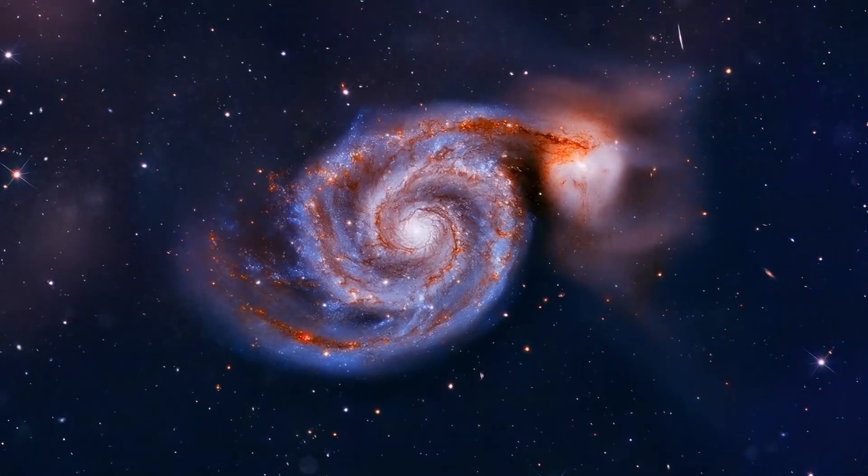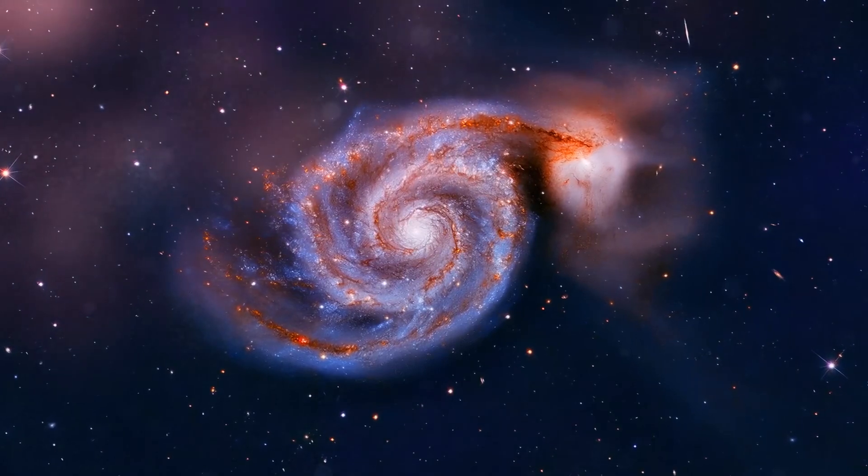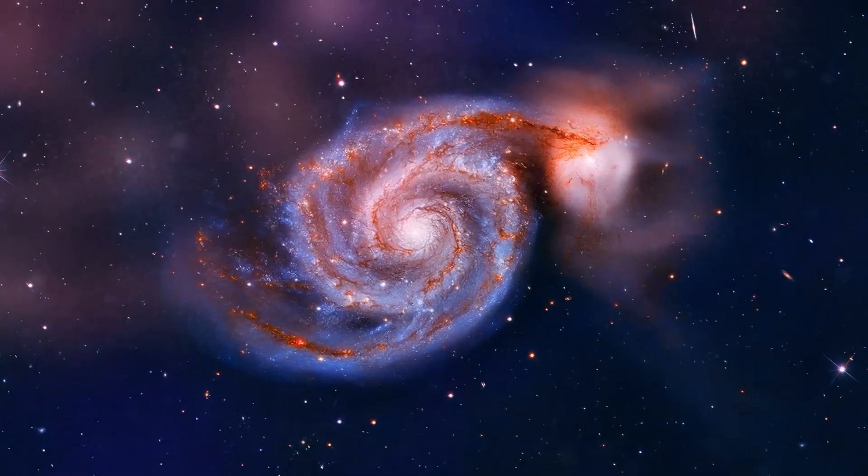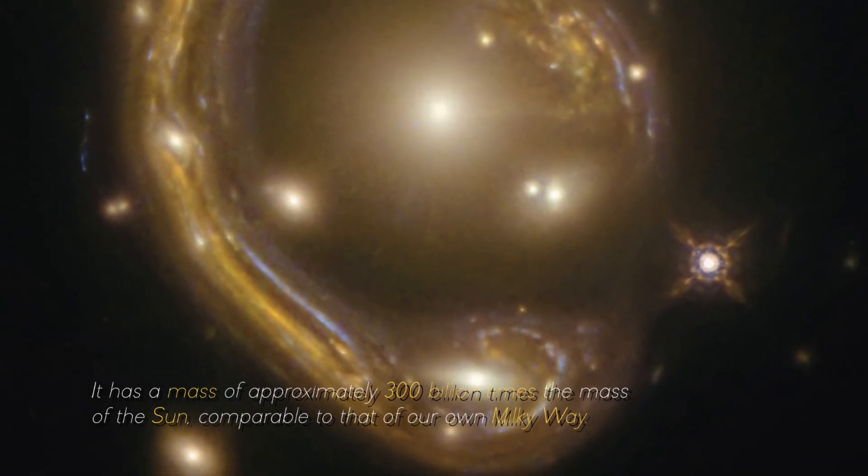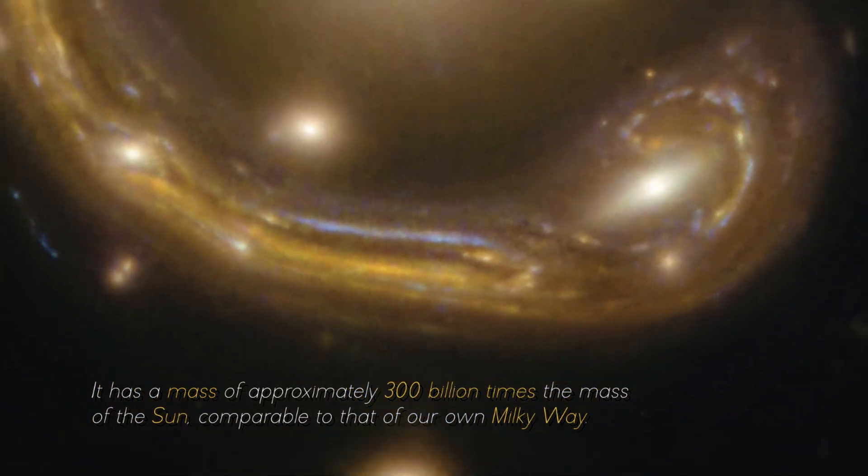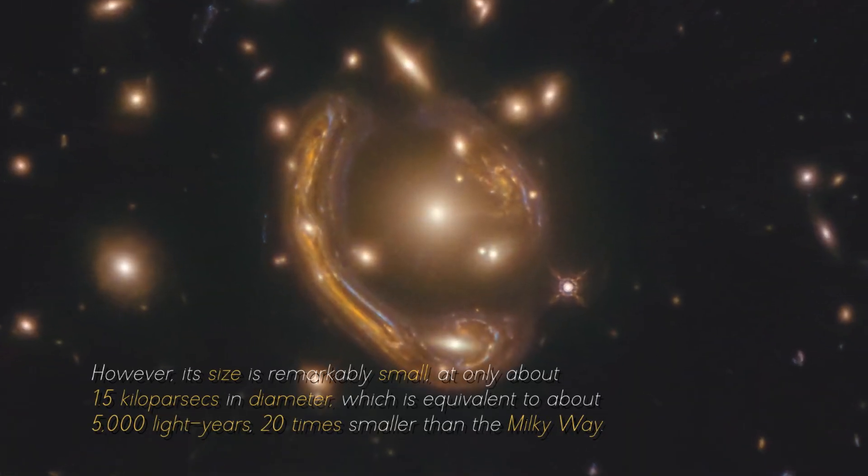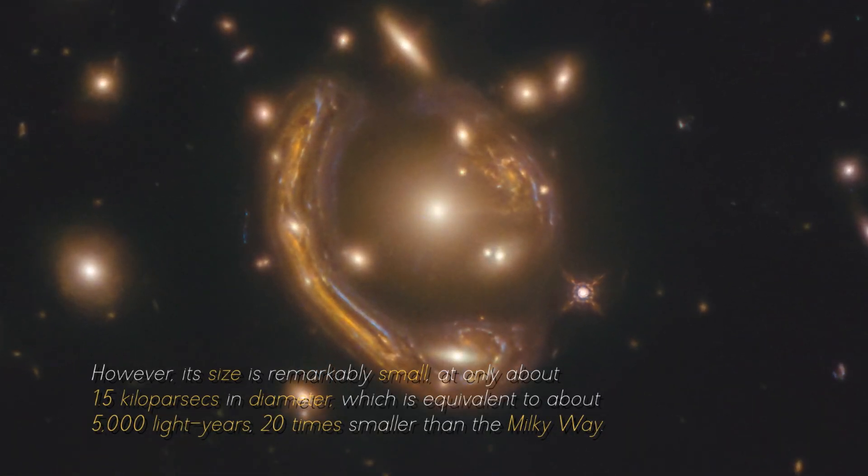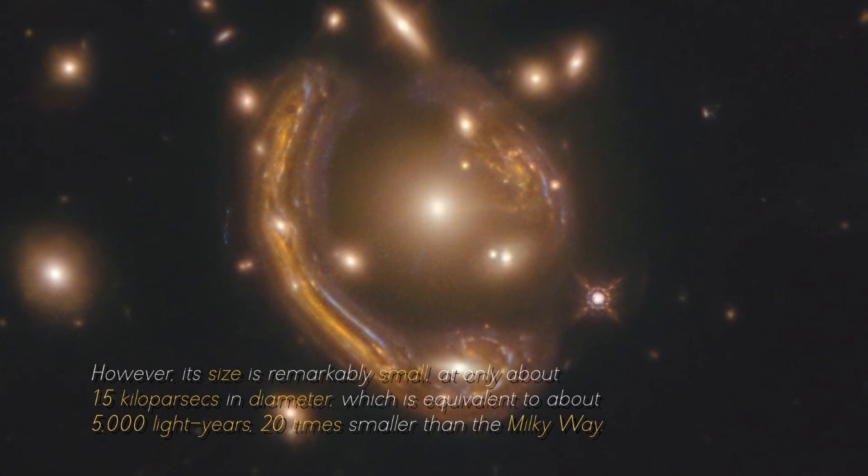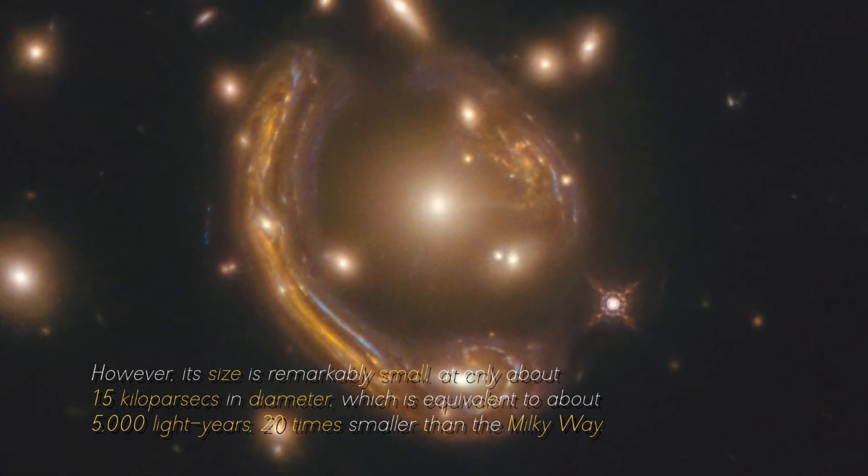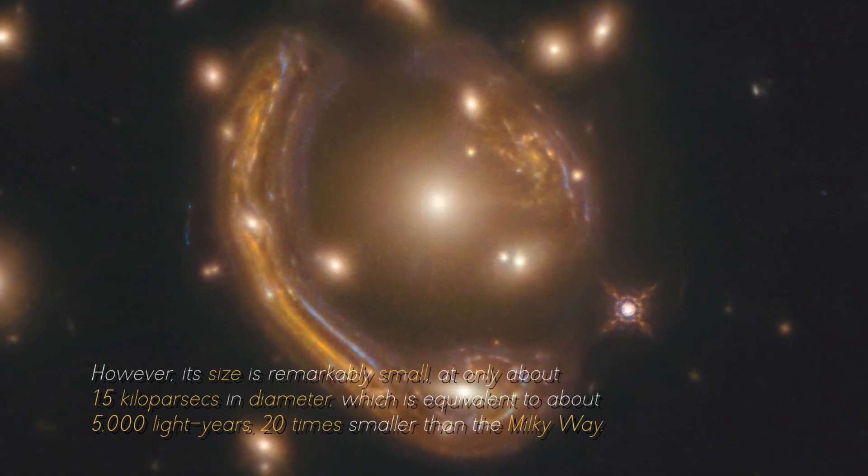However, the quiescent galaxy discovered by the James Webb Space Telescope is an extreme example of this type of galaxy. It has a mass of approximately 300 billion times the mass of the Sun, comparable to that of our own Milky Way. However, its size is remarkably small, at only about 1.5 kiloparsecs in diameter, which is equivalent to about 5,000 light-years, 20 times smaller than the Milky Way.